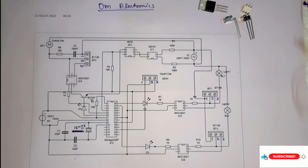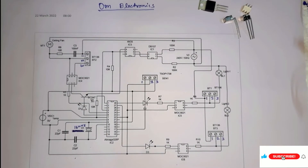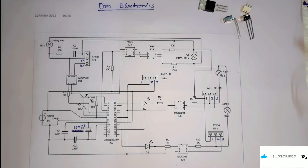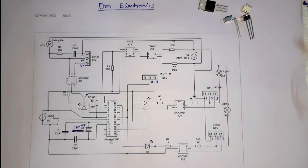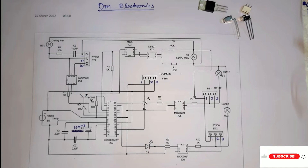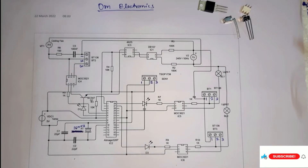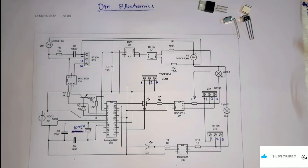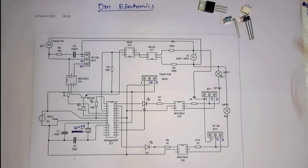Hi friends, welcome to my channel Ohm Electronics. Today we will discuss about how to make AC fan speed and light controls using Arduino. We have designed a circuit using triac and optocoupler to make a 220 volt AC fan speed controller and light control using Arduino.